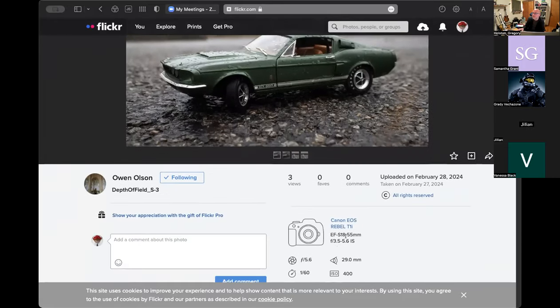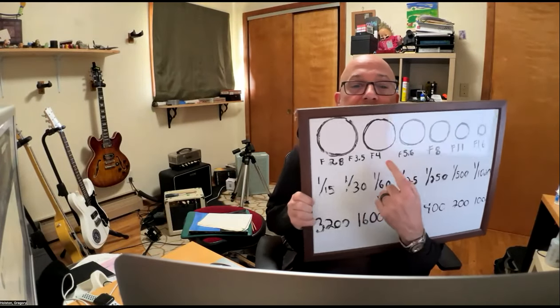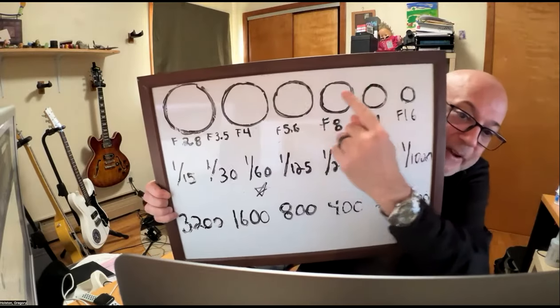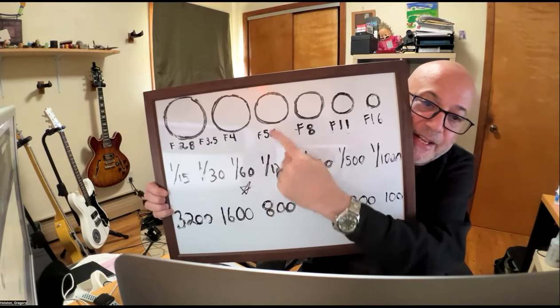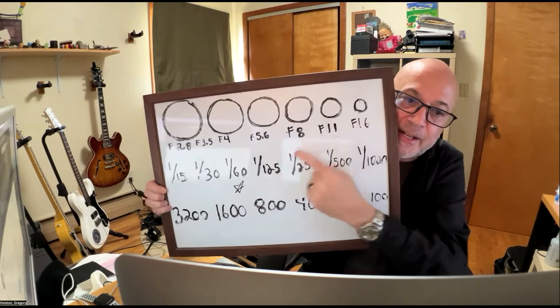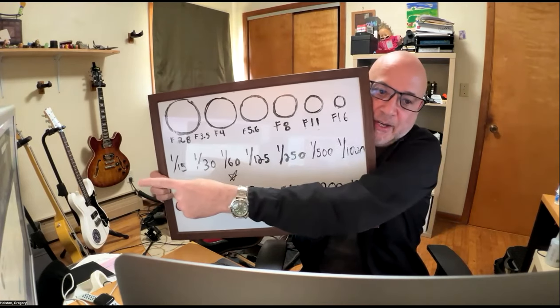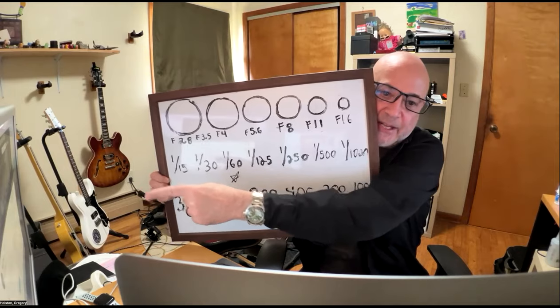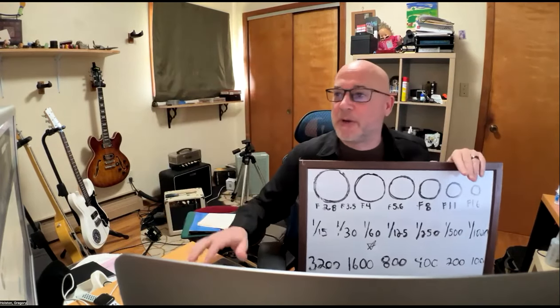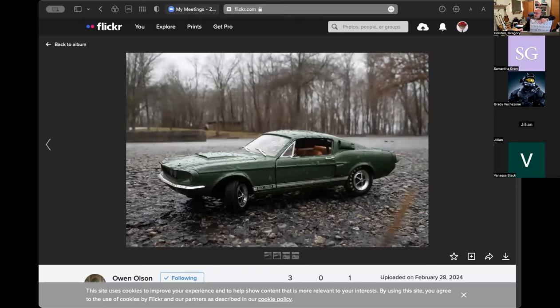He's at f5.6 at a 1/60th. When he goes to f16 - that's three stops closing down - he has to let in three stops more light the other way, so he goes one, two, three to a 1/8th of a second at f16 to get the same exposure. That's exactly what he does. Then he did it again at f5.6 at 1/1000th, which has a lot more light.